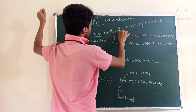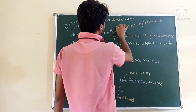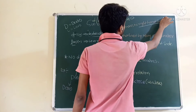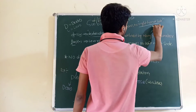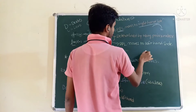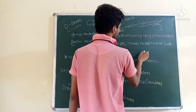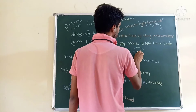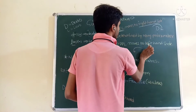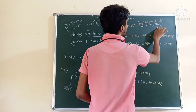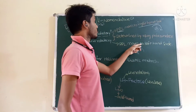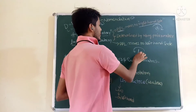Dextrorotatory means the compound moves plane polarized light towards the right hand side. If plane polarized light moves towards the right hand side, it is called dextrorotatory. If plane polarized light moves towards the left hand side, it is called levorotatory.